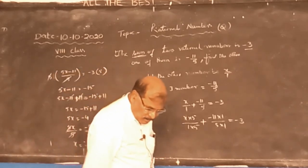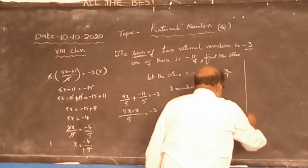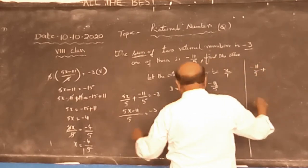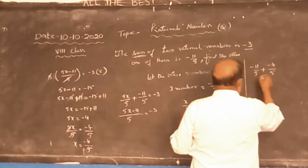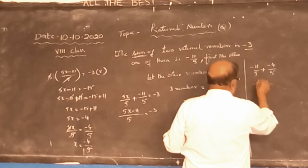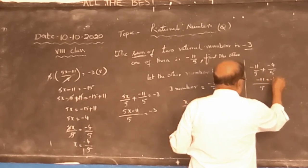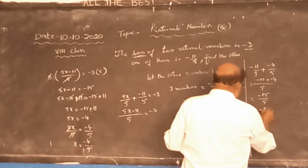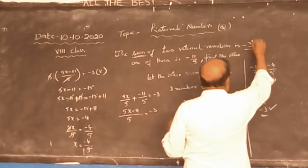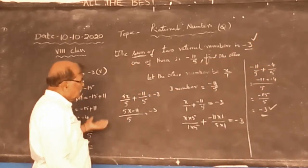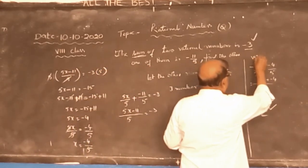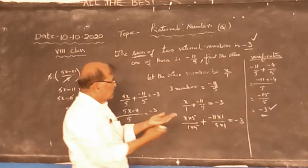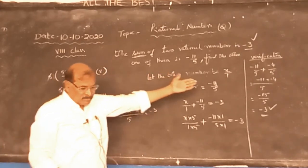So let us see whether our answer is correct or not, without looking at the back of the book. What is the first number? Minus 11 by 5. What is the number we found? Minus 4 by 5. Both denominators are the same, which is 5. So minus 11 plus minus 4 gives minus 15 by 5, which simplifies to minus 3. So the sum is minus 3, which matches the problem. This is the way of verification. You don't need to look at the back to verify your answer — you can verify it yourself. Thank you.